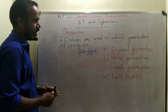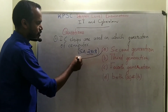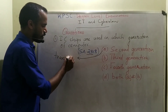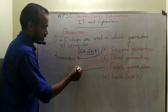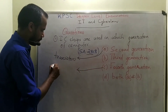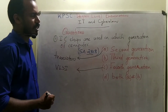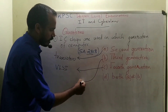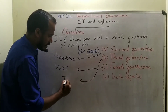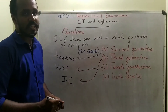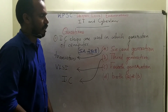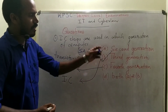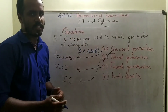Review summary: Second generation computers use transistors as switching devices. Fourth generation computers use VLSI microprocessors. Integrated Circuits are used in third generation computers — the correct answer is option B.